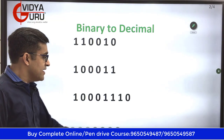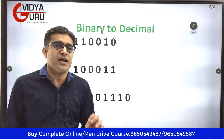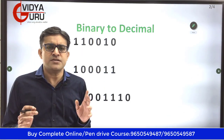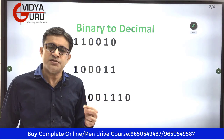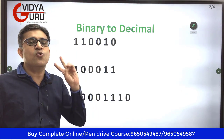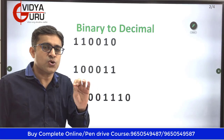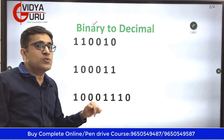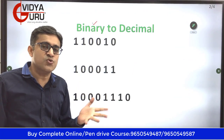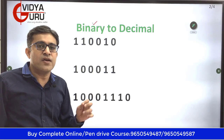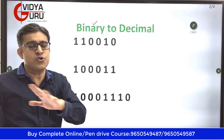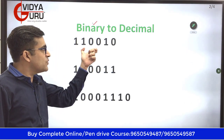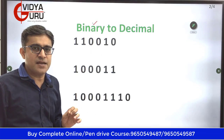The first thing we are going to learn is to convert binary numbers to decimal numbers. What are binary numbers? Very simple — binary numbers are those numbers which are written using only 0 and 1. I am going to convert these binary numbers into decimal numbers. You know what decimal numbers are — where we use all the digits from 0 to 9. So let's convert this binary number into decimal number.